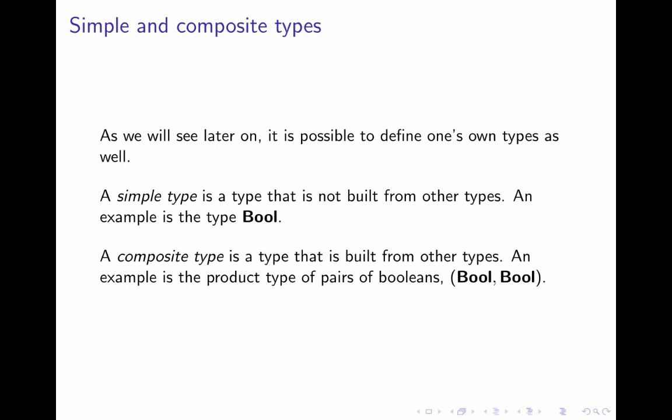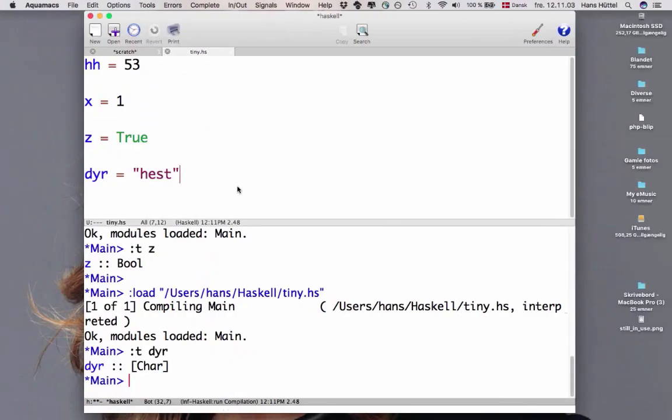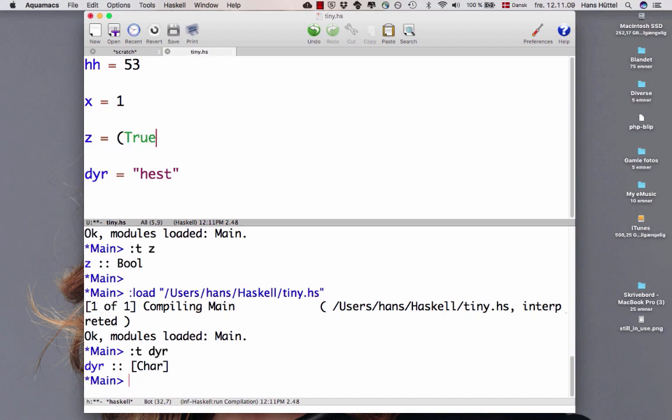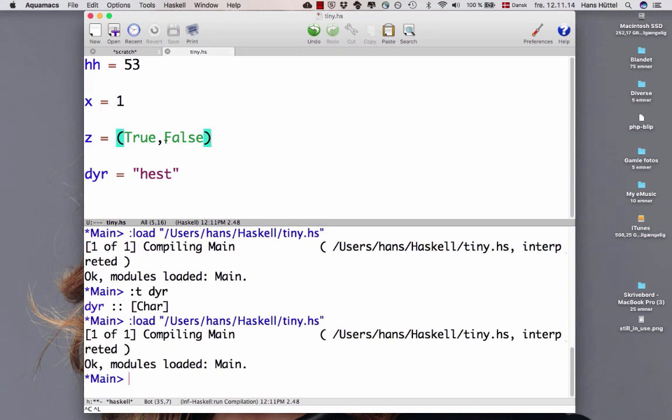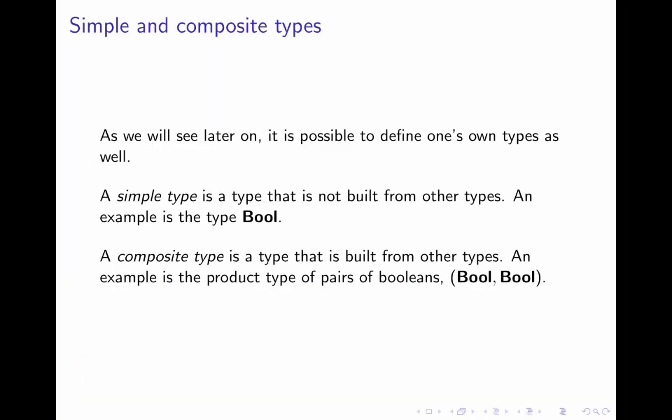Let's have a look at that. Suppose we redefine z to be not true but true comma false. Now this is a pair. Let's save that. Load that into Haskell. What's the type of z? As I said, it is bool comma bool which is a pair type. That's a composite type. And later on we'll see that we can define our own types as well. We don't have to stick to the ones that are predefined.